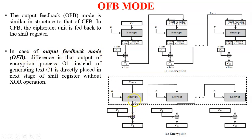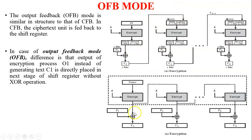The output O1 is directly placed into the next stage of the shift register without an XOR operation at that stage. In CFB mode, XOR is performed to generate C1, and then the output of that ciphertext is given to the shift register. In OFB mode, the output O1 of the encryption is given directly to the second process of encryption.